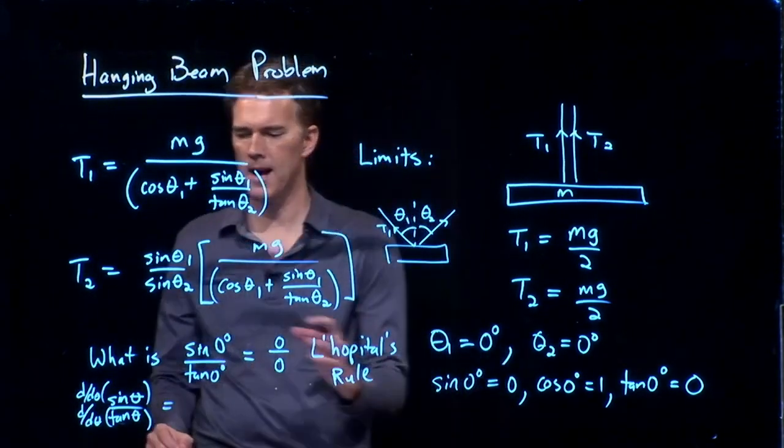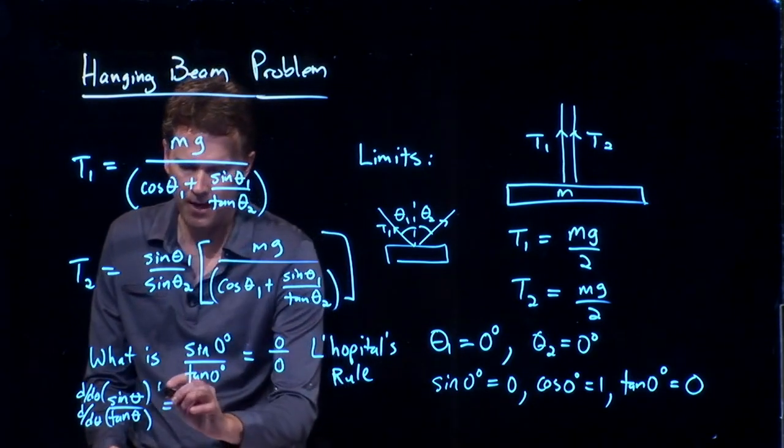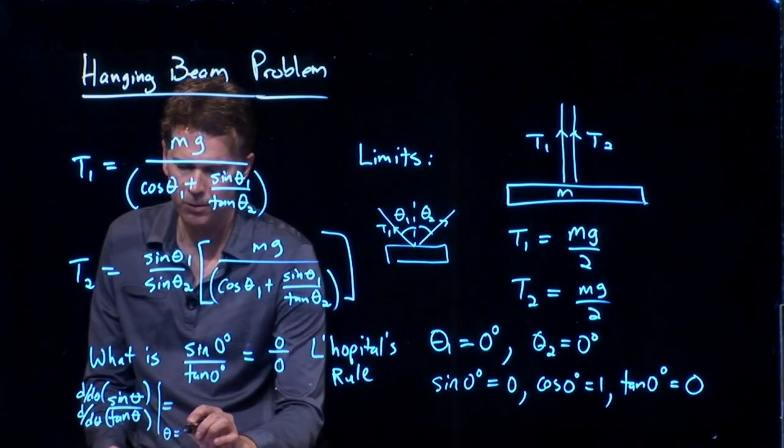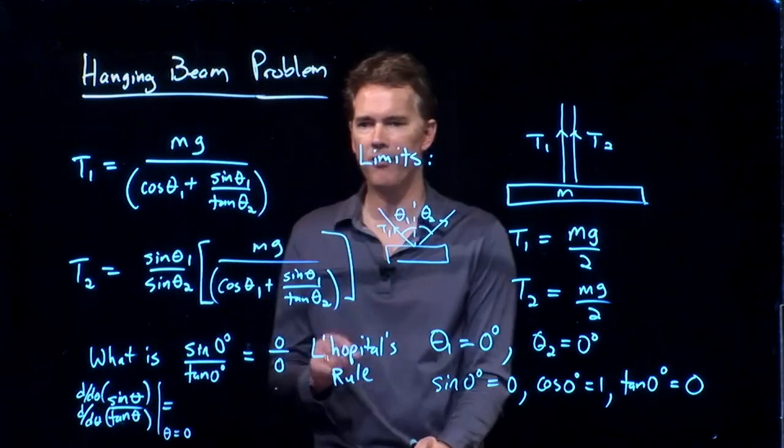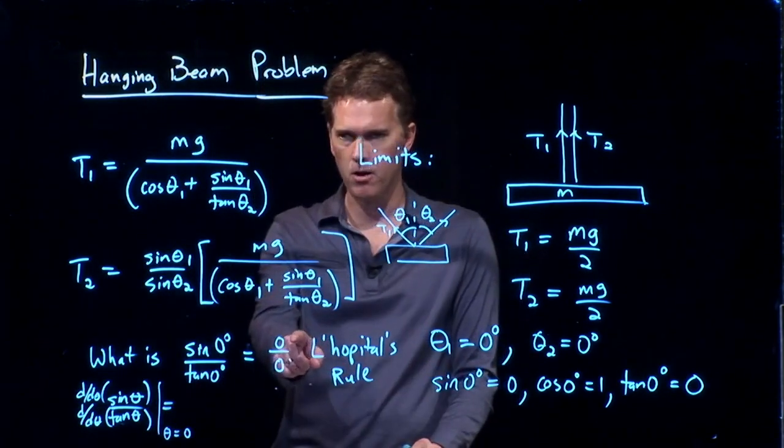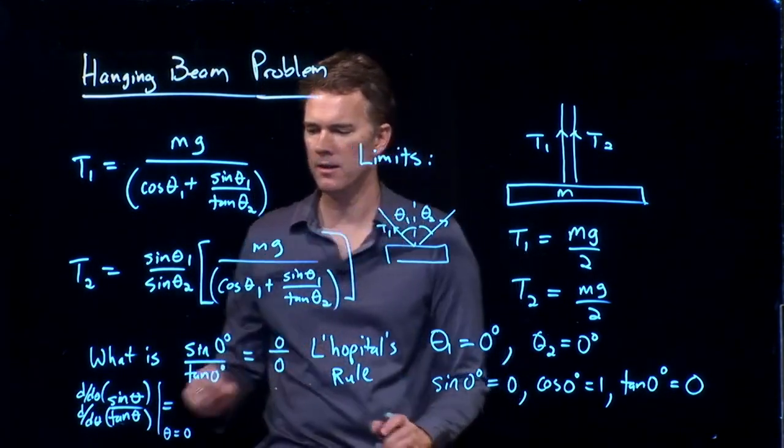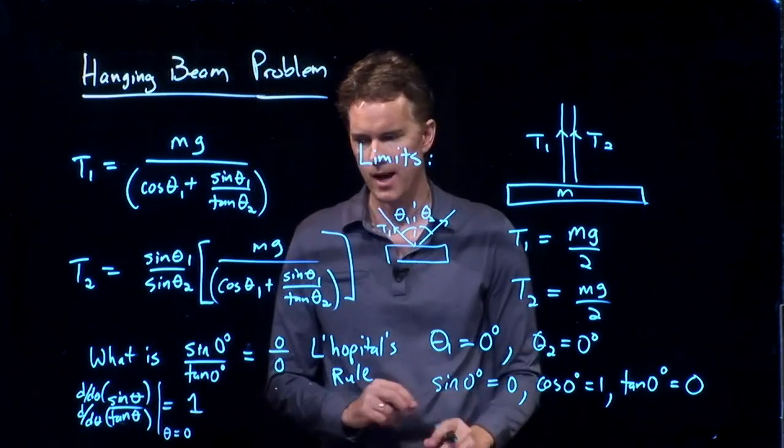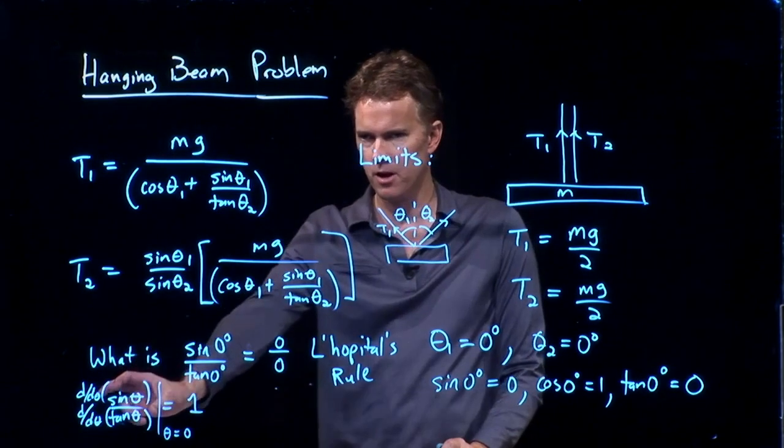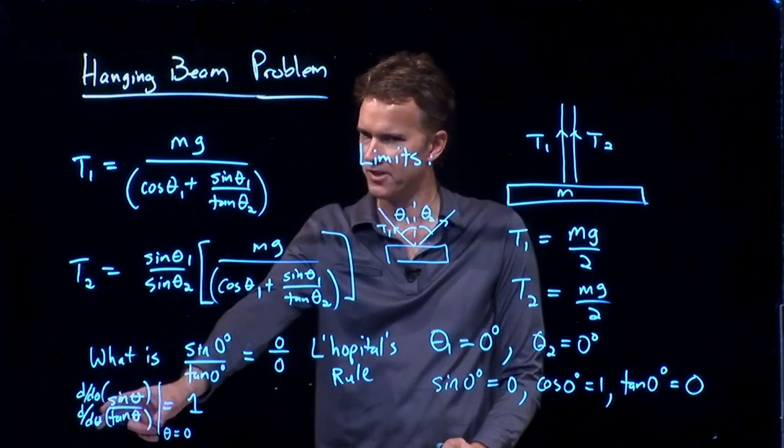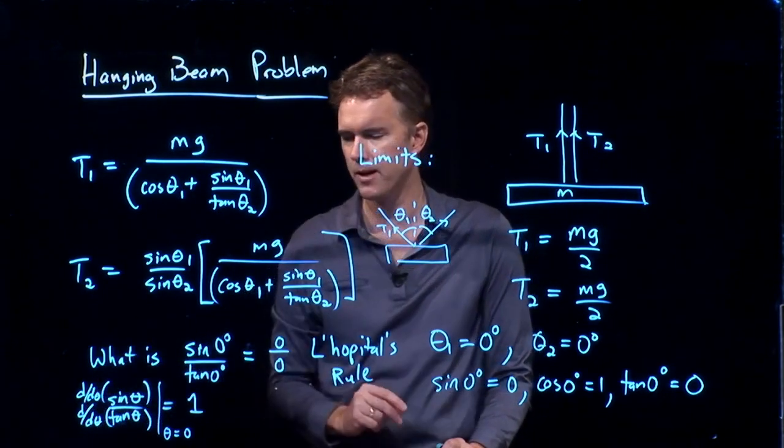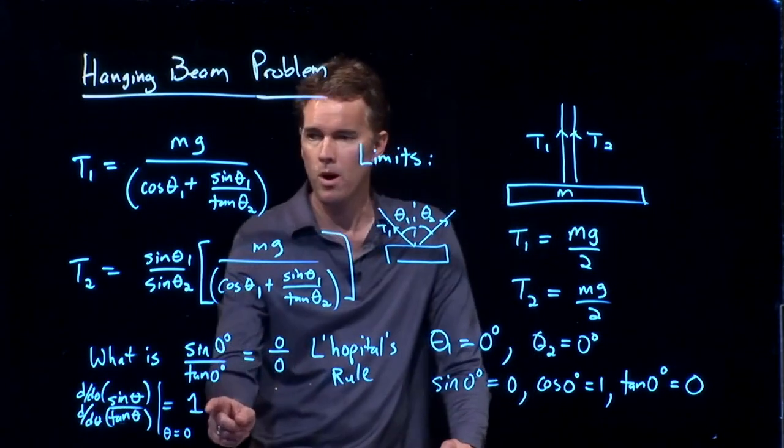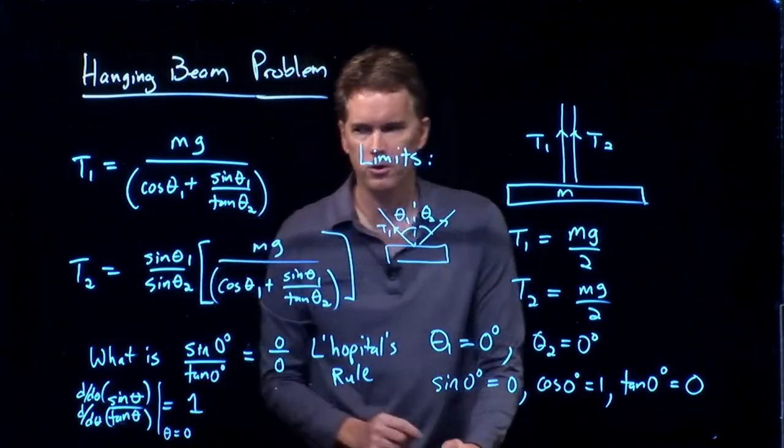And when you do that, when you do a derivative of the top over the derivative of the bottom, and then you plug in theta equals zero, in fact, what you get is not zero and not infinity. You get one. Okay? And I'll let you work that out yourself. Derivative of sine is easy. Derivative of tangent is a little bit harder, but not too bad. But you, in fact, get one.